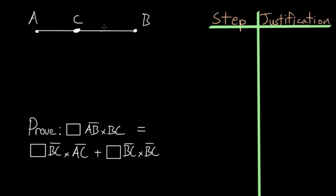...then this rectangle would be equal to the rectangle formed by the segments, so the rectangle formed by AC and BC, plus the square on this segment BC.